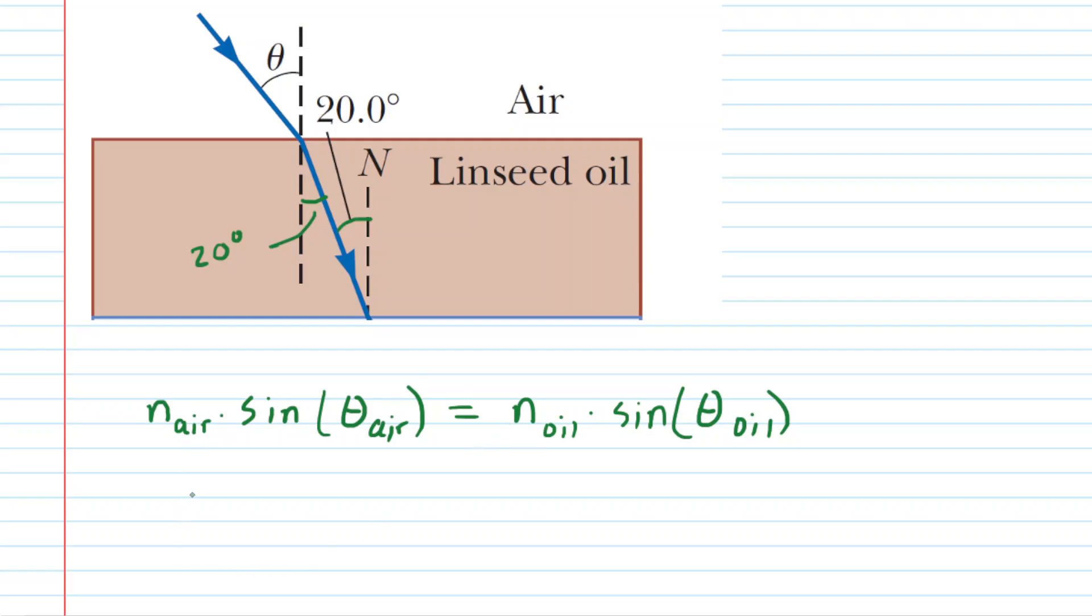Now many of these values are known, but what we do not presently know is the incident angle at the air side of the interface. So we're going to be solving for this angle right here. The other values are known. For example, the index of refraction of air is a well-known value equal to 1. And then the question gives us the index of refraction for the linseed oil. That is 1.48. And then as determined, we have the refracted angle in the linseed oil. That is 20 degrees.